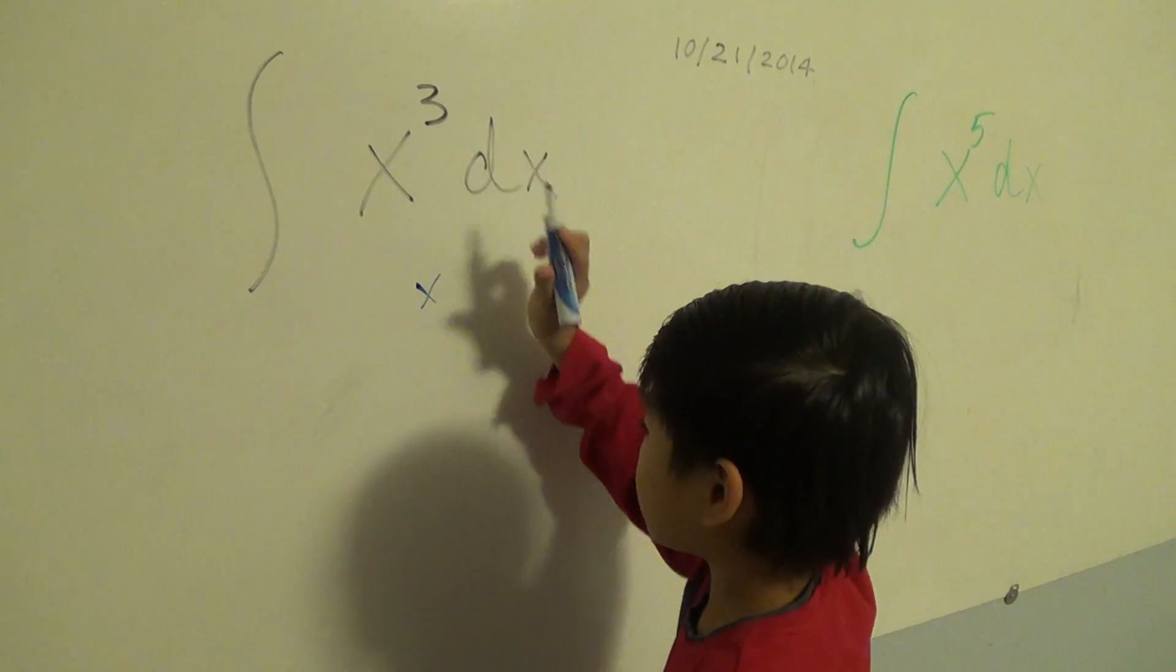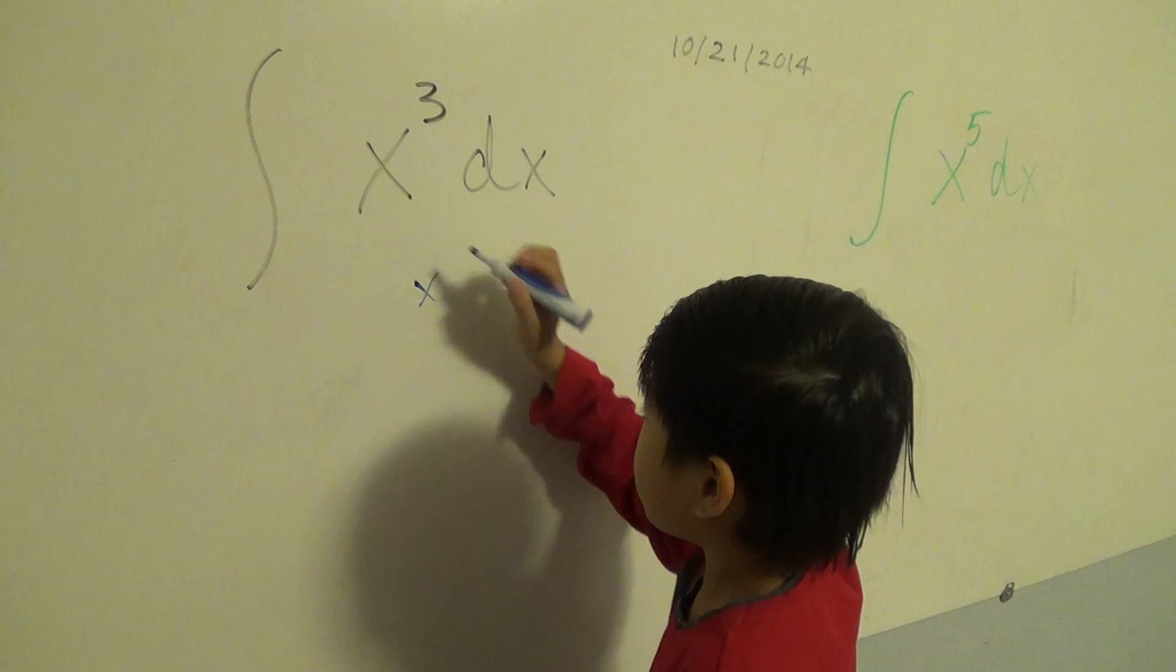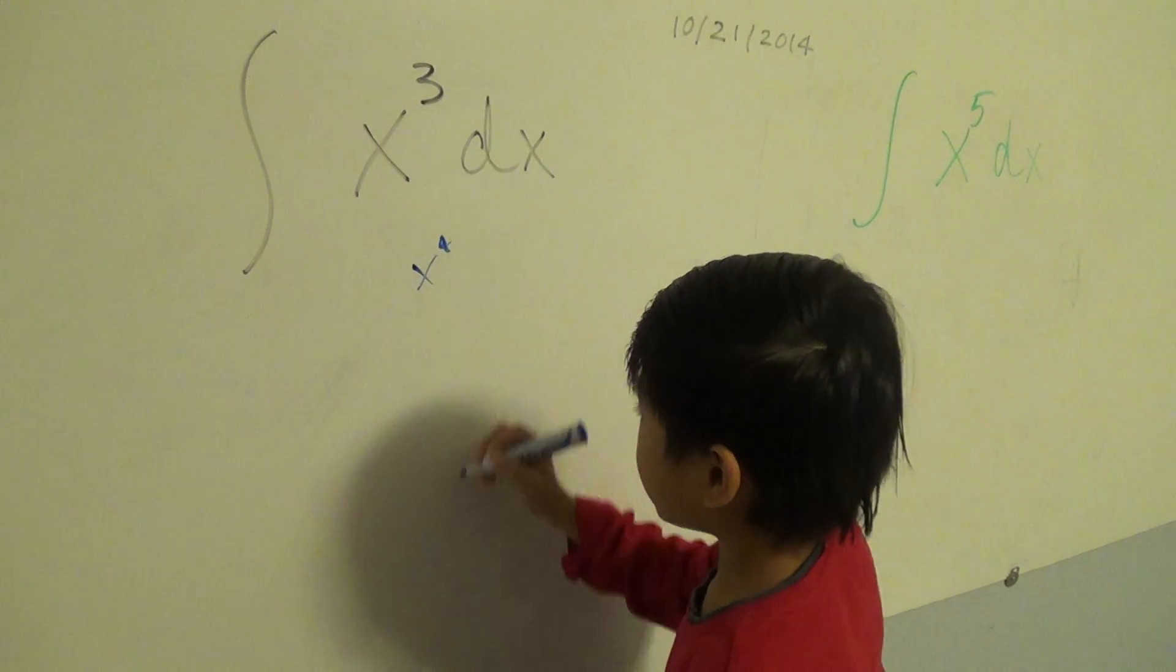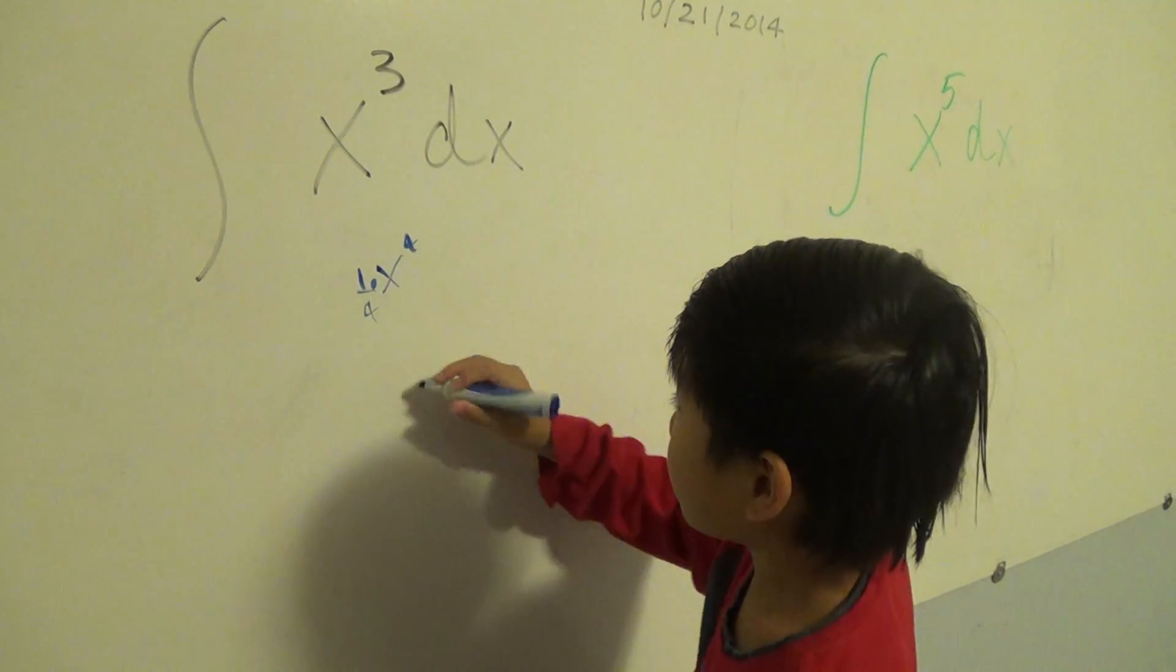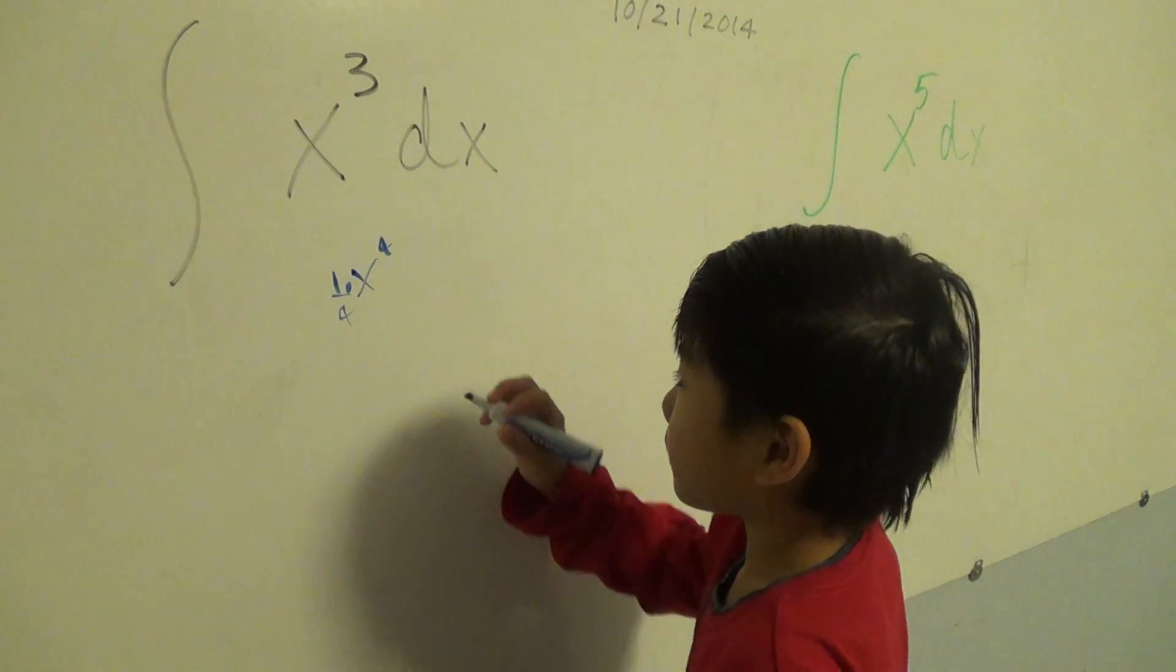X, when I said go up, I mean this, go up the number. So 3 go up 1 is 4, and then when I said upside down, you put 1 over 4. And then with the integral sign, when your rate went up, you put a plus C.